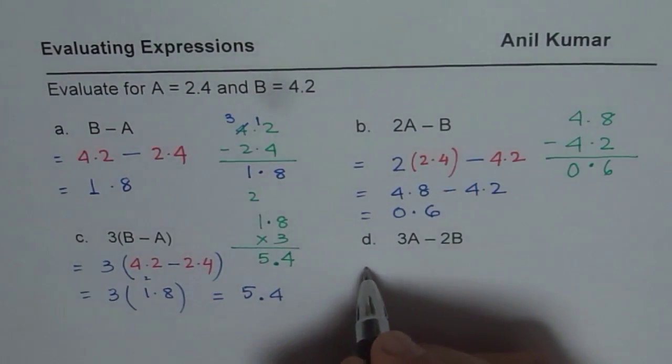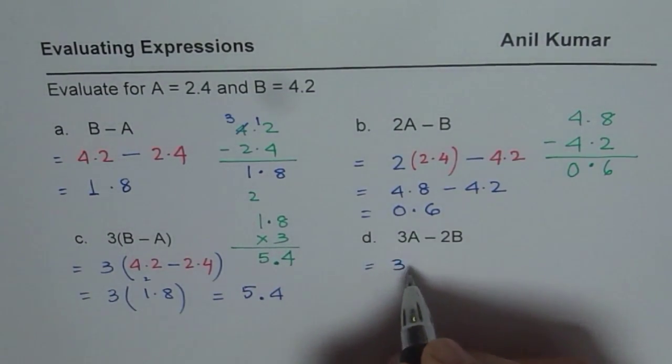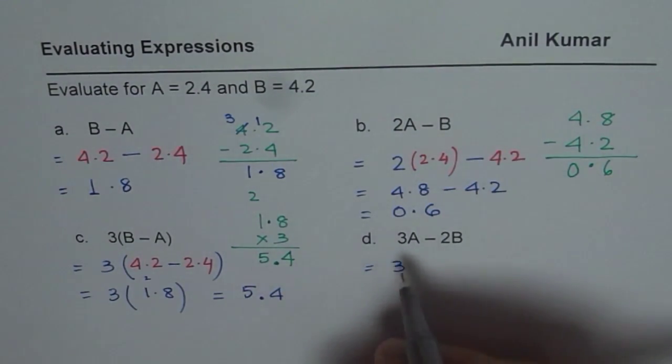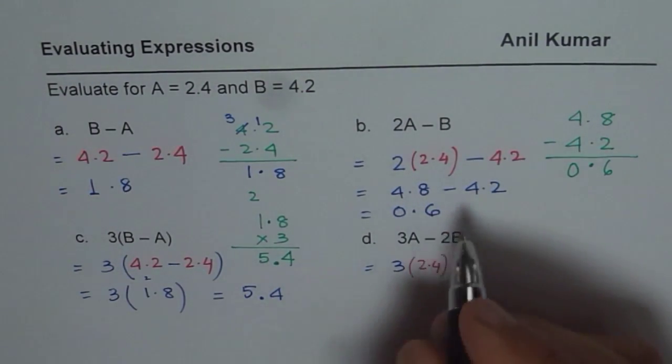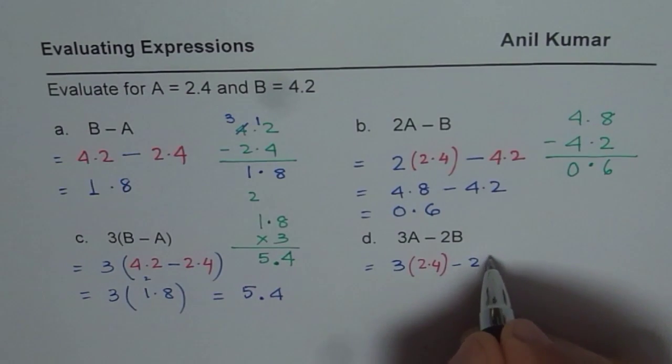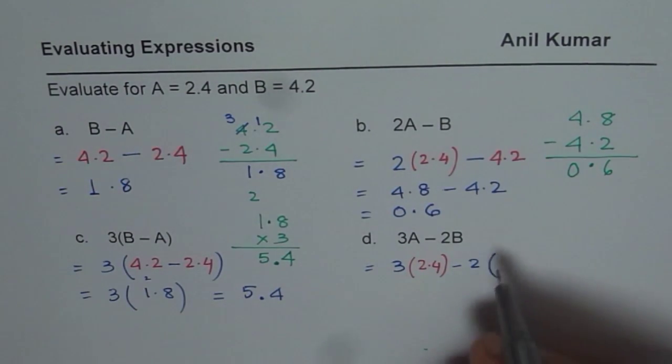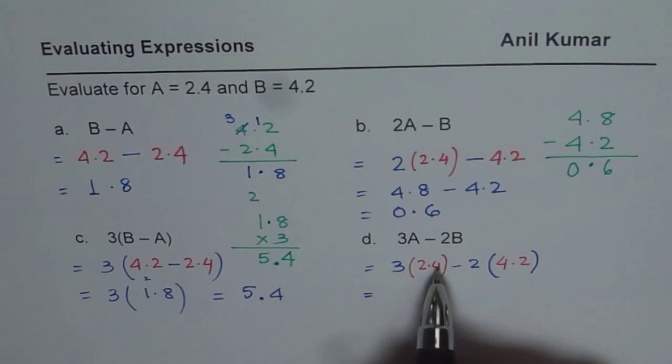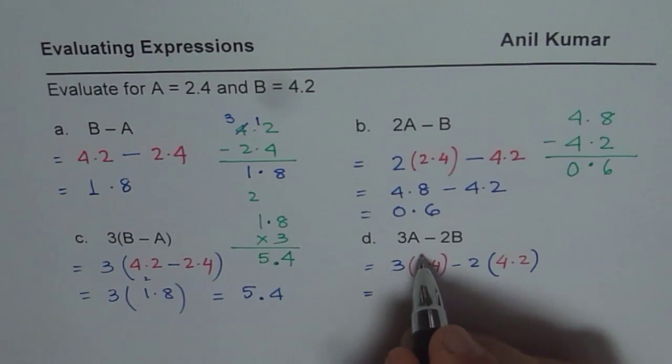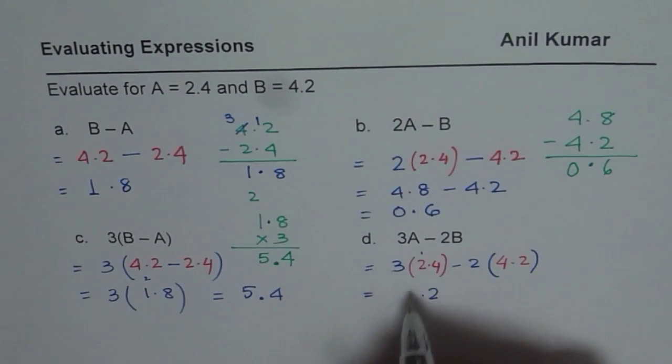The next one is equals to 3 times A and A is given to us as 2.4, so 2.4 minus 2 times B. So minus 2 times B is 4.2, 4.2. You can actually pause the video, do it yourself and then check your answer. So let's multiply first by 3. 3 times 4 is 12, 2. 1. 3 times 2 is 6 and 1 is 7.